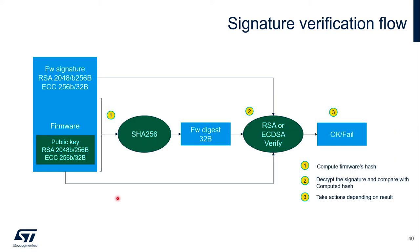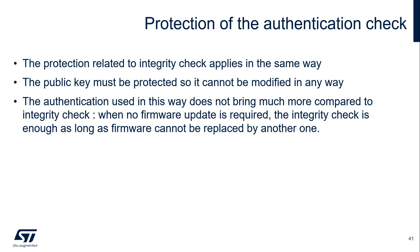In the signature verification flow, the first step is to do SHA-256 digest computation using the whole firmware binary data. Then the second step is to run ECC or RSA signature verification algorithm using the computed digest, the public key embedded in the firmware, as well as the firmware signature data from the flash. Further action can then be taken depending on the signature verification result. The application procedure can start if the signature verification is successful.